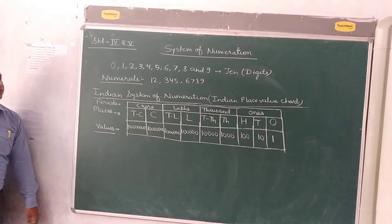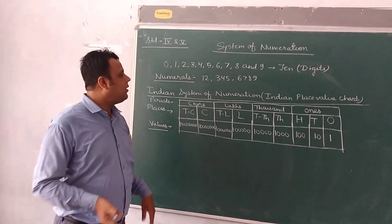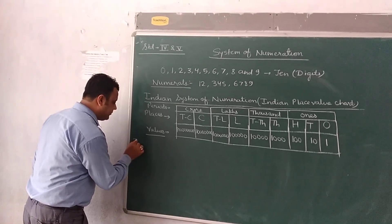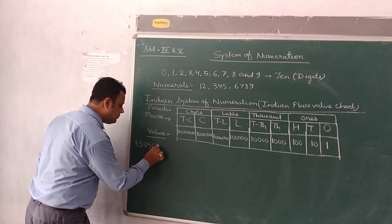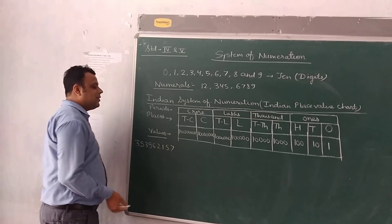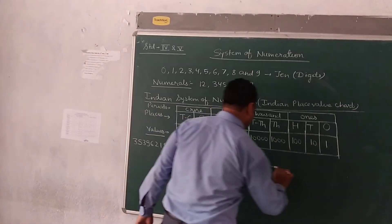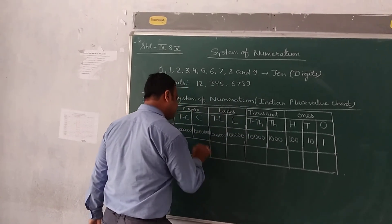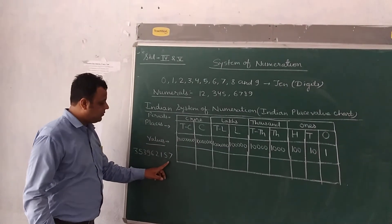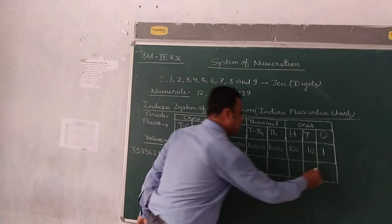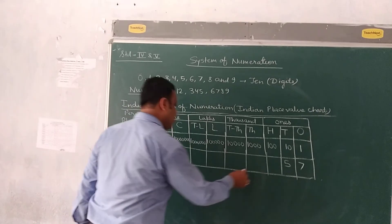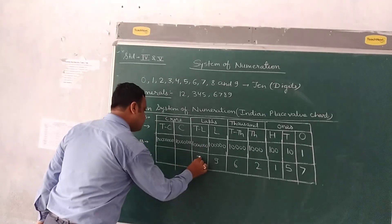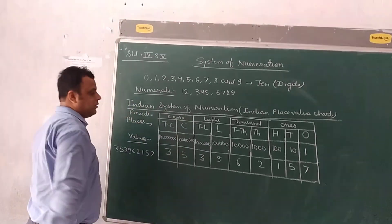Now I am going to explain this place value chart with an example. Let's take a number. We have to write this number in the place value chart. We write from the right side: 7, 5, 1, 2, 6, 9, 3, 5 and 3.